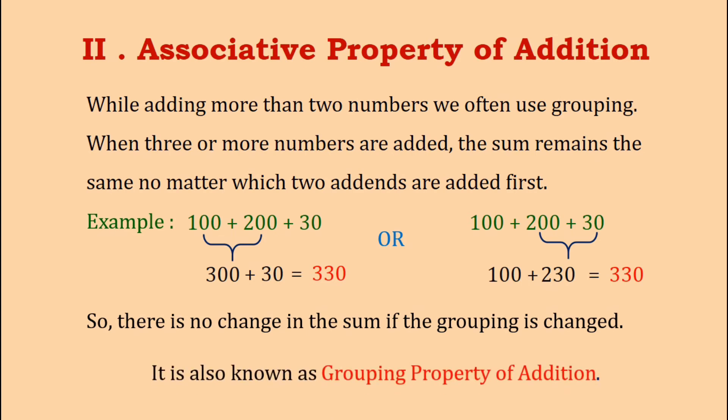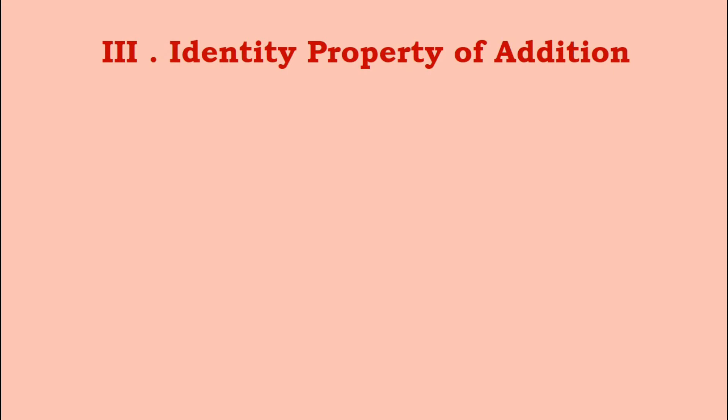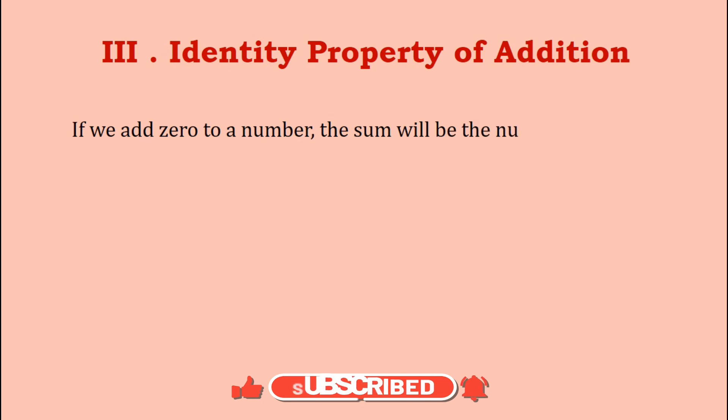Lastly, we will learn about the third property which is known as the identity property of addition. According to this property, when we add zero to a number, its sum will be the number itself.